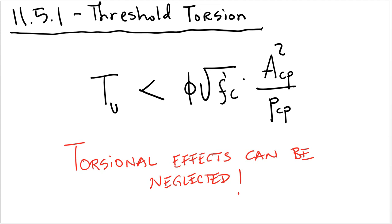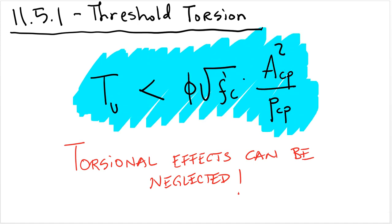So this you want to compute first, before you do any torsional design. You want to check this number first, because if your ultimate torsional moment is less than this, you're done. No need to do anything particular in order to resist torsion.